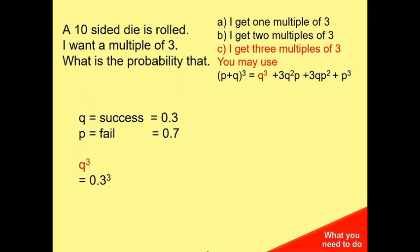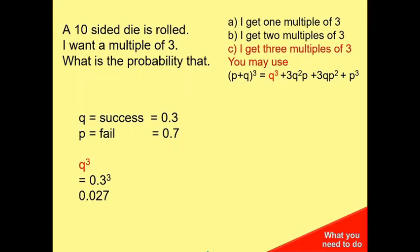If I get three multiples of three, it's my first one success, my second one success, my third one success. It's my first term, which is 0.3 cubed, as I just said, which is 0.027.